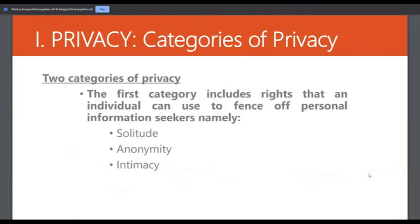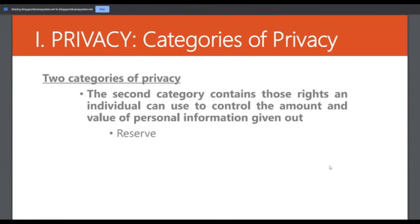Privacy has two categories. The first category includes rights that an individual can use to fence off personal information seekers, namely solitude, anonymity, and intimacy. The second category contains those rights an individual can use to control the amount and value of personal information given out.